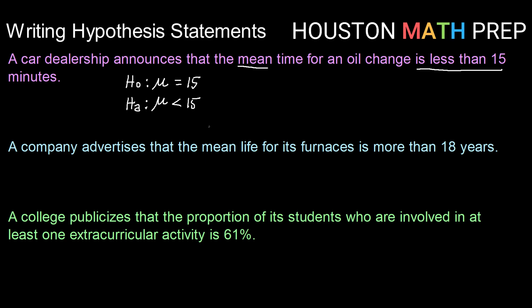All right, let's check out the next one. Let's say a company advertises that the mean life for its furnace is more than 18 years. So again, we're going to go ahead and write a set of hypothesis statements. H sub 0 is our null hypothesis, always a statement of equality. And H sub a is our alternative hypothesis, usually to do with our claim.